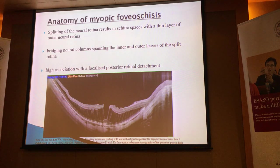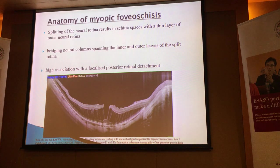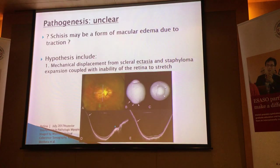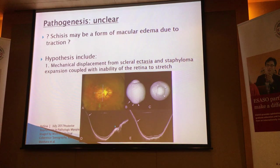As mentioned earlier, traction is one of the reasons why you're getting this problem. So when you do an OCT, also look out for what we call a localised posterior retinal detachment as well. What is the pathogenesis? At the moment, unfortunately, it's unclear. In the beginning, when we first started looking at this condition, people were wondering whether or not all these cystic cavities are actually macular edema due to traction.